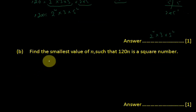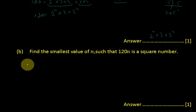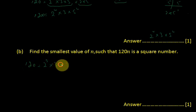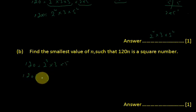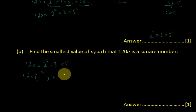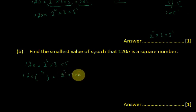Point B: find the smallest value of n such that 120n is a perfect square number. So 120 can be written as 2 cubed multiplied by 3 multiplied by 5. There must be some number n which we multiply so that it becomes a perfect square.